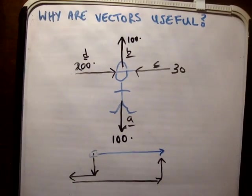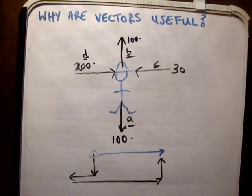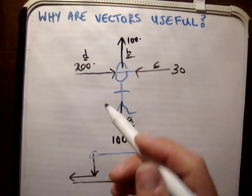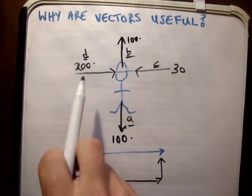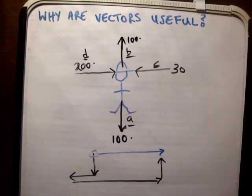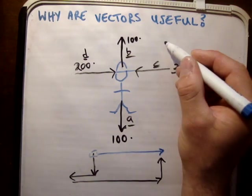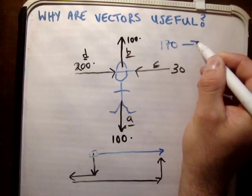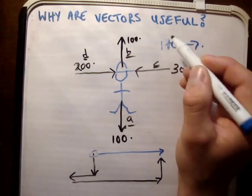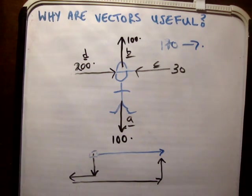Which is exactly what you'd expect - B and A cancel out, C goes left by 30 units, and D goes right by 200 units. So the net is 170 units to the right. That's the overall result. The point is that by representing quantities as vectors, you're able to add them together and get the overall picture of what's happening. That's why vectors are useful. Thanks for watching.